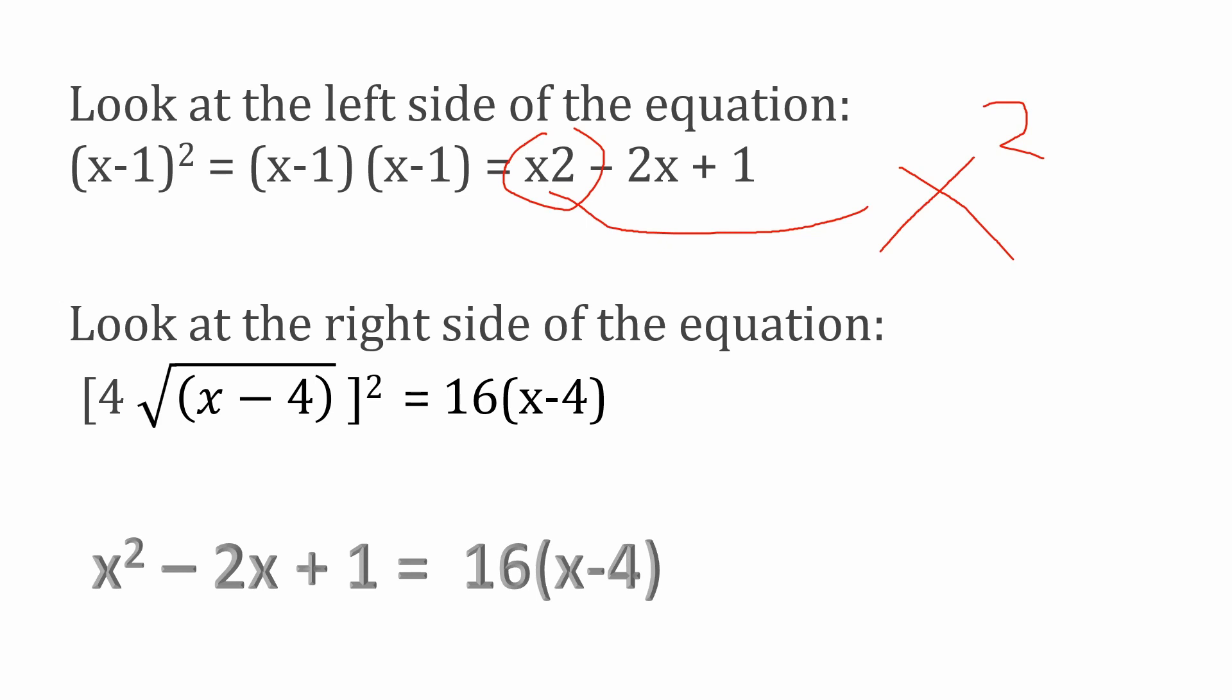So then if you look at the right side of the equation that we have, we're squaring what's in the brackets, the 4 times the square root of the quantity x minus 4. Well, it's pretty easy to look at that and say, well, 4 squared is 16. And if you're taking the square root of x minus 4 and then squaring it, well, you're basically left with just x minus 4. So that makes that side of the equation pretty easy.